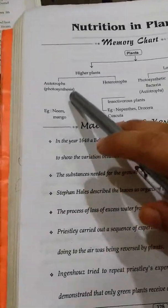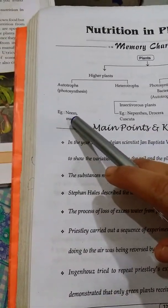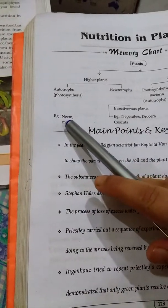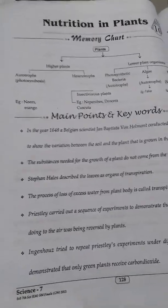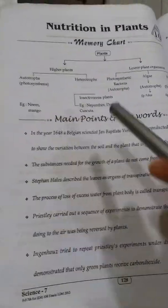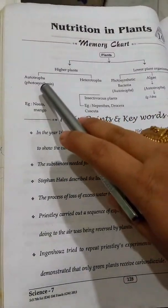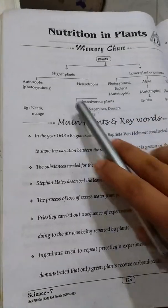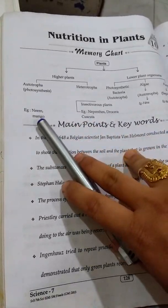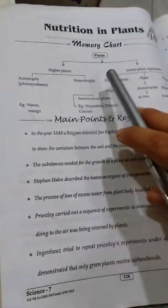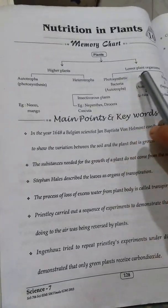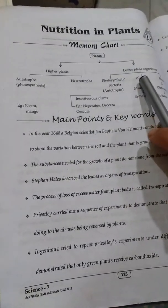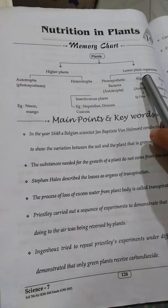One type of autotrophic plant is big-sized plants. Examples of big-sized autotrophic plants include neem and mango plants. These plants consist of big-sized autotrophic and heterotrophic plants. Autotrophic plant examples include neem plants, while heterotrophic plants contain lower organisms.